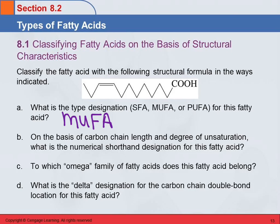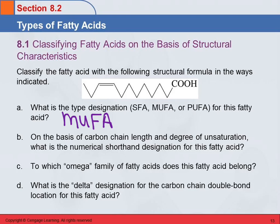On the basis of carbon length and degree of unsaturation, what's the numerical shorthand — the two numbers with a colon in between? Let's count them: 1, 2, 3, 4, 5, 6, 7, 8, 9, 10, 11, 12. So we would call this 12:1 — 12 carbons, one double bond.